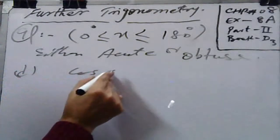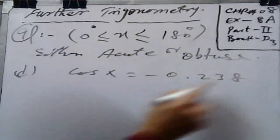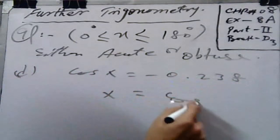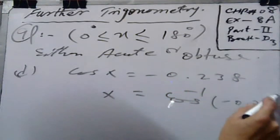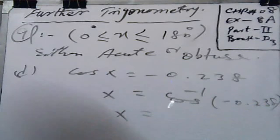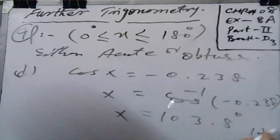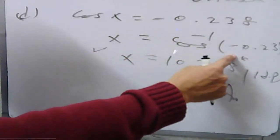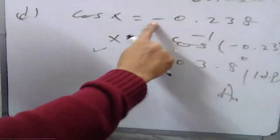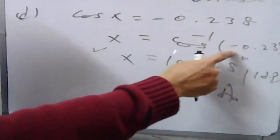Now another part: cos x is equal to minus 0.238. Cos inverse of minus 0.238 gives x = 103.8 degrees, up to 1 decimal place. Since cosine is negative, it is perfectly obtuse. That is clear from the given question.